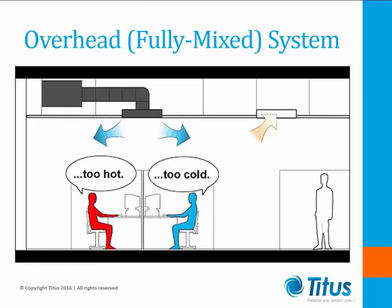Systems that deliver air from overhead typically supply cooling at 55 degrees Fahrenheit. This is necessary because in order to deliver cooling to the occupied zone and ventilation to the breathing zone, the supply air must first break through the layer of warm air at the ceiling. This layer is formed due to the increased buoyancy of warmer room air, often containing higher concentrations of pollutants and contaminants, and the heat from lighting systems. Since people often have different preferences when it comes to thermal comfort, it can be challenging to keep everyone satisfied and productive when spaces are served by a single thermostat setting. UFAD systems are different.